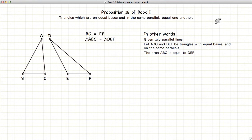This video presentation is on Proposition 38 of Book 1, which states that if you have two triangles where the bases and the vertices are on the same two parallel lines, and if the bases equal each other, BC equals EF, then the two triangles are equal in area.